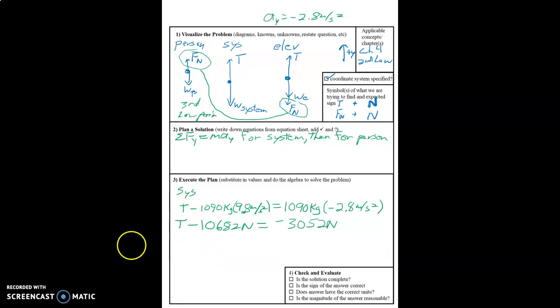Now we're going to add 10,682 to both sides. And we get 7,630. And that's our answer for part A.